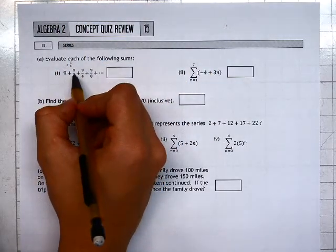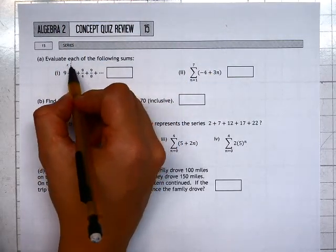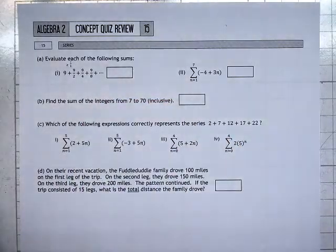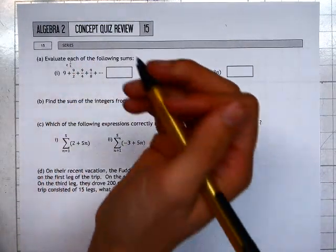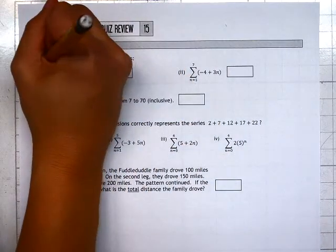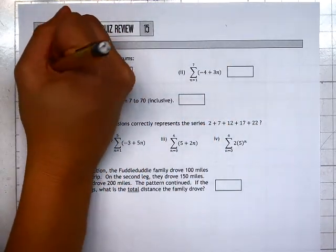Since 9 times 1 half is 9 halves, 9 halves times 1 half, and so on. So because we know we have a multiplier of 1 half, we know we're a geometric sequence, or I'm sorry, geometric series, which means we have an infinite geometric to work with.